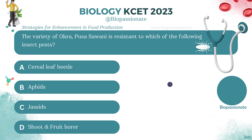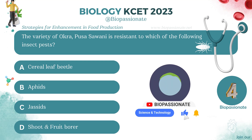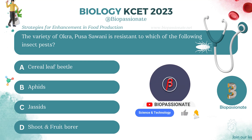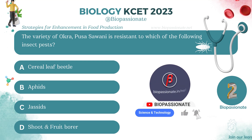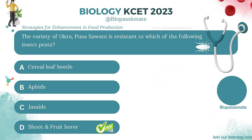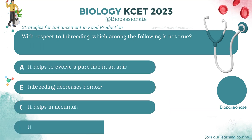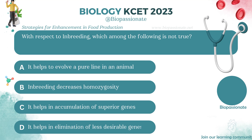The variety of okra Pusa Savani is resistant to which of the following insect pests? Answer: Shoot and fruit borer.